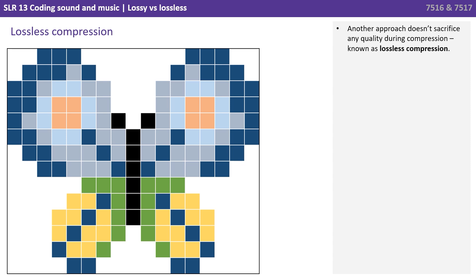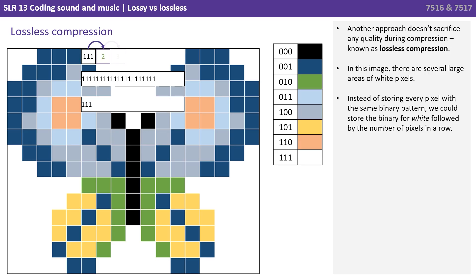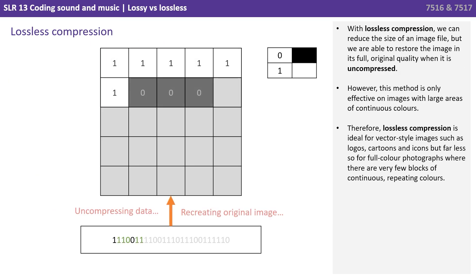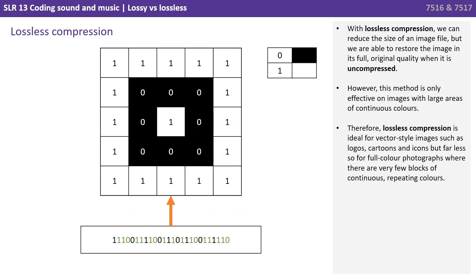Another approach doesn't sacrifice any quality during compression, and this is known as lossless compression. In this image there are several large areas of white pixels. Instead of storing every pixel with the same binary pattern, we could store the binary for white followed by the number of white pixels in a row. With lossless compression, we can reduce the size of an image file, but we're able to restore the image in its full original quality when it's uncompressed — and that's the important difference.